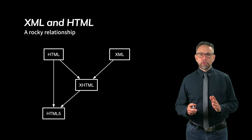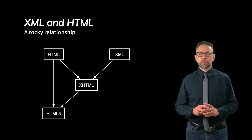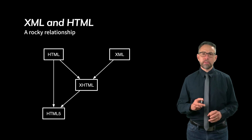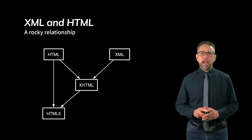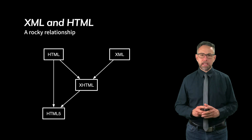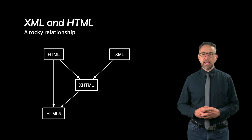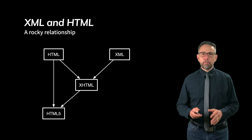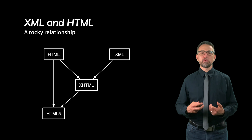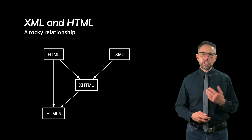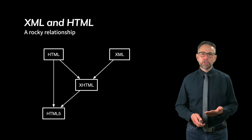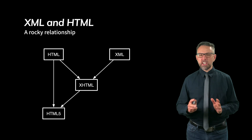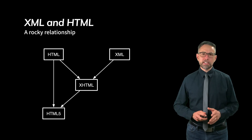XML and HTML have had a rocky relationship from the beginning. HTML formed out of people working in the web space, while XML was developed primarily in the academic space. For a long time, the W3C worked to merge them into a language called XHTML, and they did release an XHTML standard. However, industry participants pushing web technologies faster continued moving HTML forward to the HTML5 standard, which is not quite XHTML anymore. They merged at one point, but strictly speaking, they're not the same anymore.